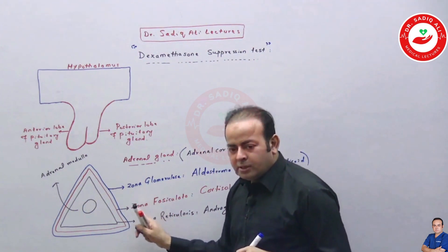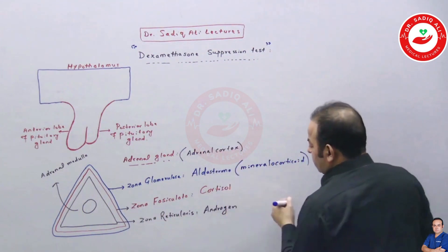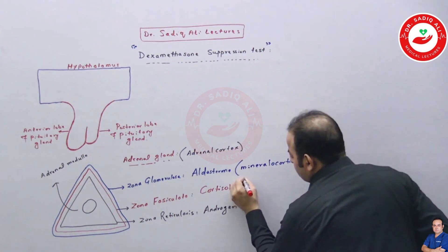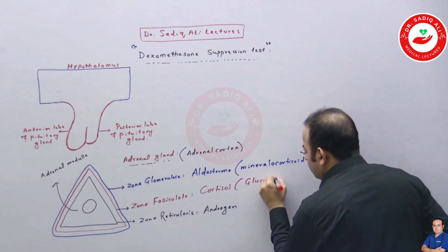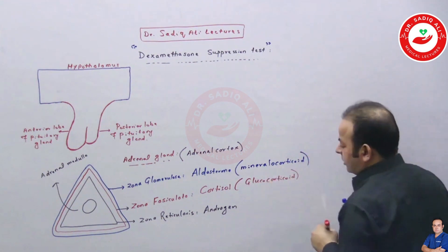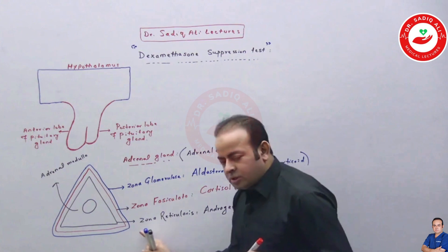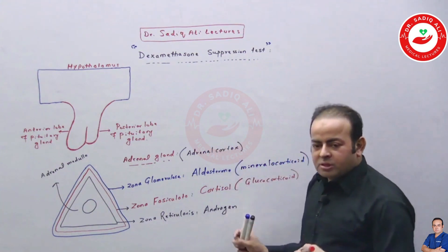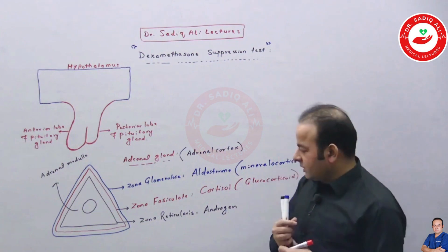The middle layer is the zona fasciculata, which releases cortisol, also known as a glucocorticoid. The zona reticularis releases androgens, which are sex hormones like estrogen, progesterone, and testosterone.